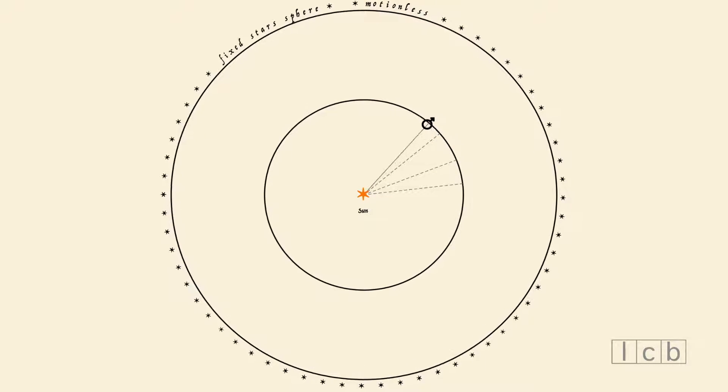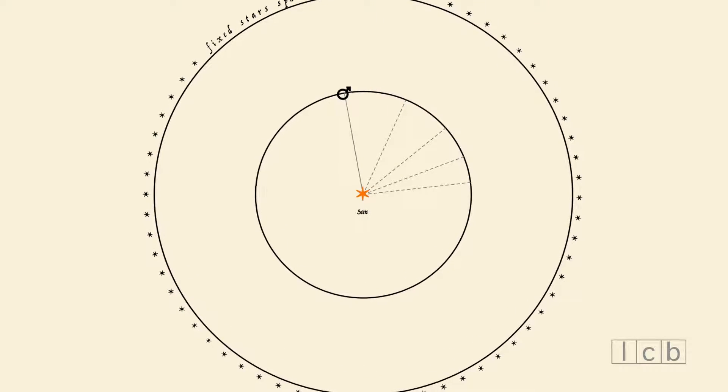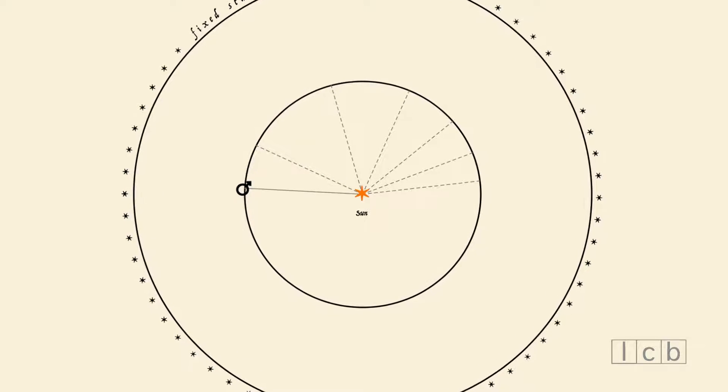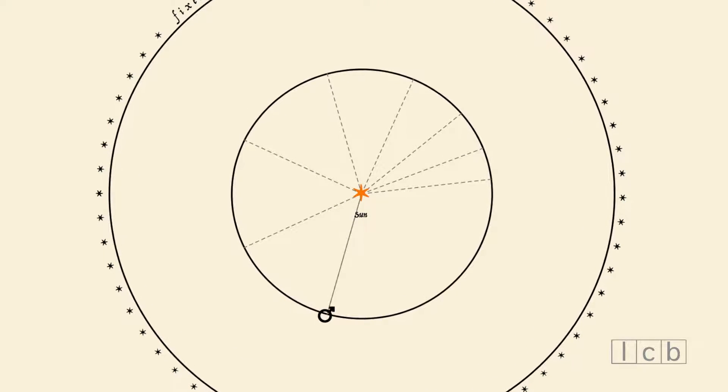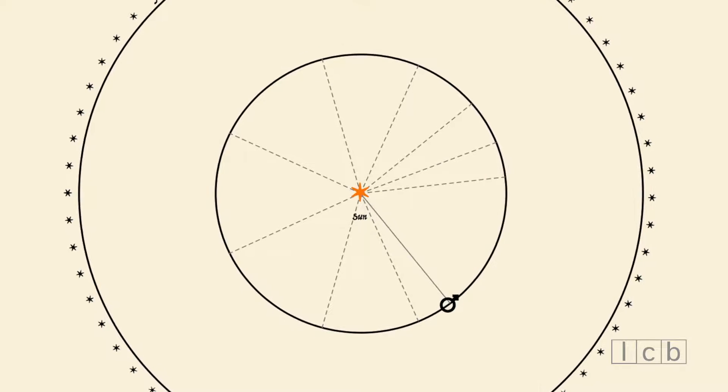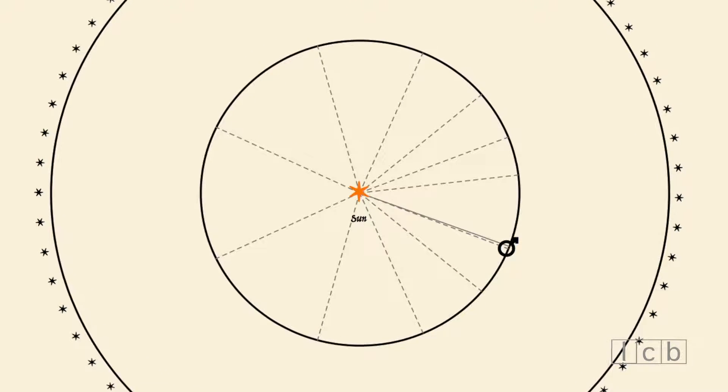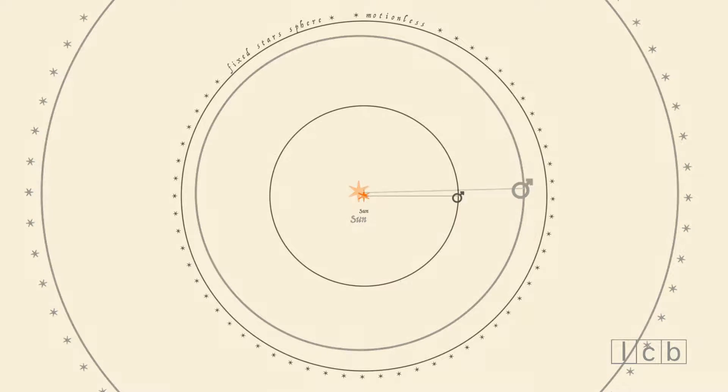In astronomy, we measure angles, not distances, and what we observe is that planets travel different angles in equal periods of time. Consequently, if the motion were to be circular, it would not be uniform.